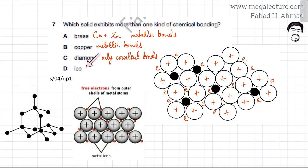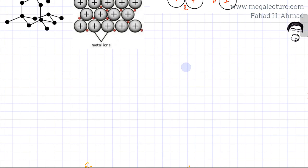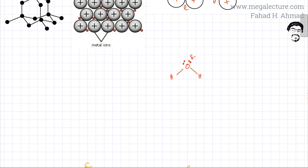Now let's look at ice. A water molecule has two hydrogens and lone pairs on oxygen. The lone pairs carry a partial negative charge, while the hydrogens carry a partial positive charge because oxygen is very electronegative. This water molecule will attract other water molecules by hydrogen bonds.